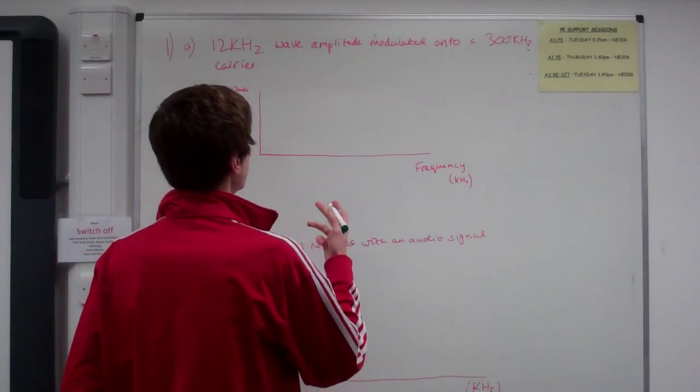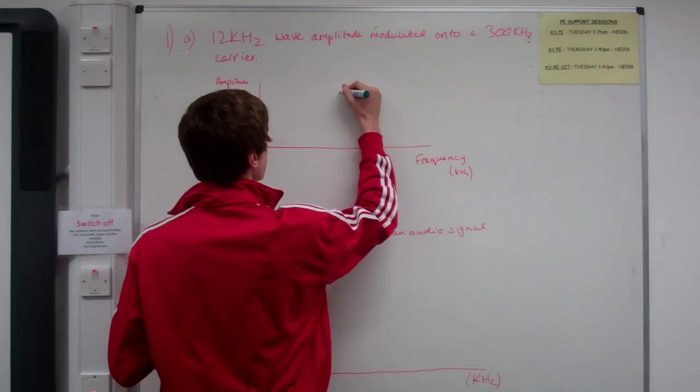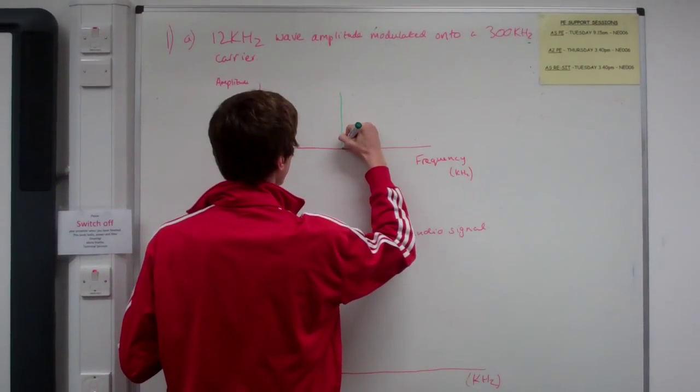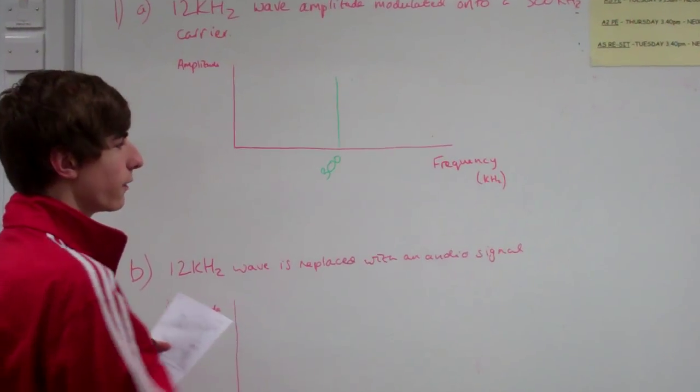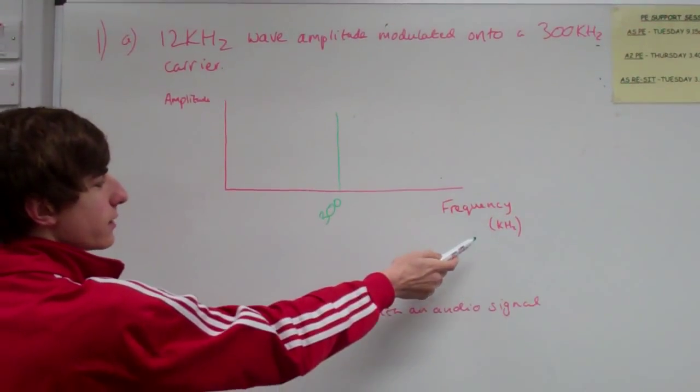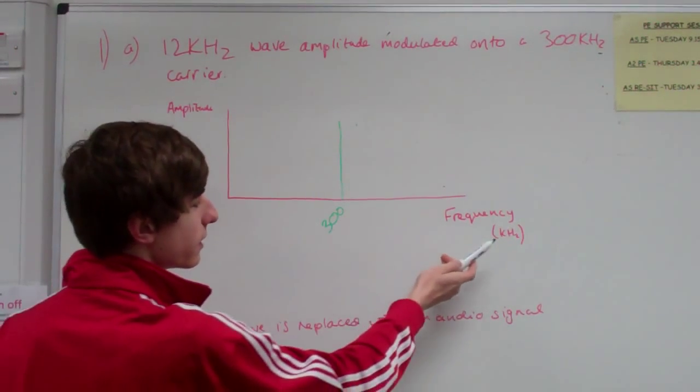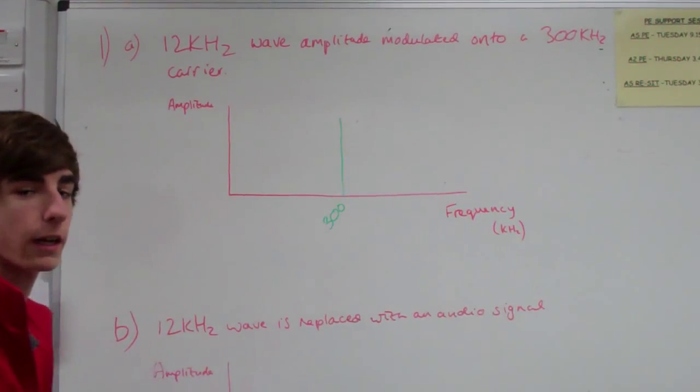So, nice and simple, you start off with the first main carrier frequency there of 300 kilohertz. Always watch out for what it says down here, because if that says hertz, you need to write 300,000. If that says kilohertz, you need to write just 300.